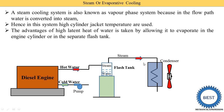To remove heat from the steam, another medium is required. Here we use air. If air passes naturally, it is natural circulation, but here we use a fan to force air circulation through the condenser.